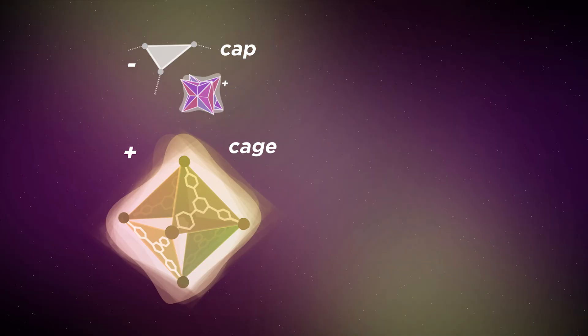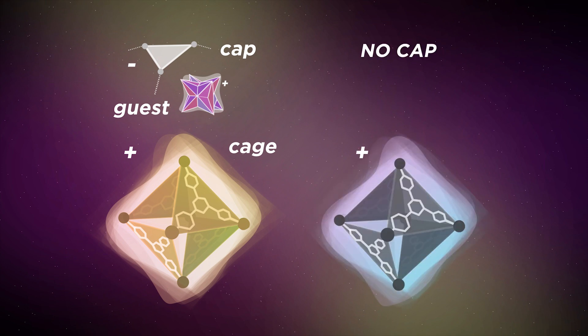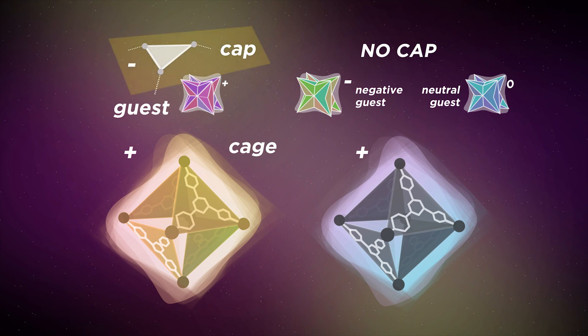Wow, that may just have been the nerdiest sentence I've ever said in my life. So we have three main characters, the cage, the cap, and the guest. Normally, without the cap, our positive cage would only work with a negative guest. But as I said earlier, if we had a negative cap, we can trap a positive guest in our positive cage.